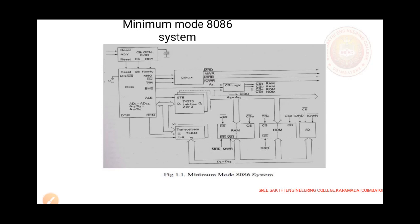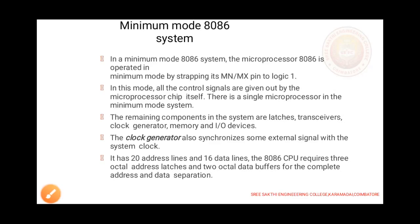Next is the transceiver. When DEN is enabled, the transceiver demultiplexes the data from the multiplexed address and data line; afterwards it transfers the data to the external data bus. For minimum mode, you select one for the minimum and maximum pin of the 8086 processor. This is a single processor configuration. The remaining elements are latches, transceiver, clock generator, memory, and input/output devices. We also have an external clock generator which is used to pulse the external signal.